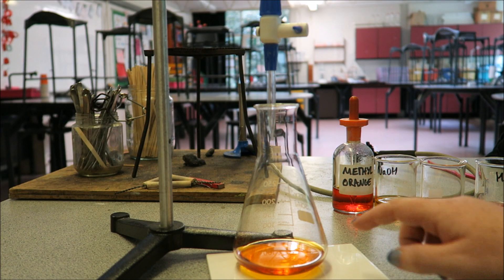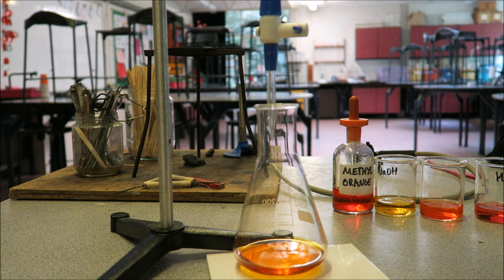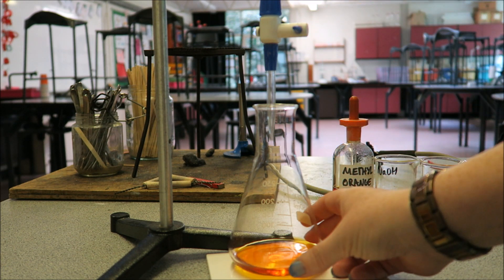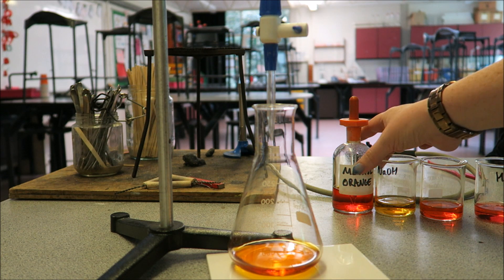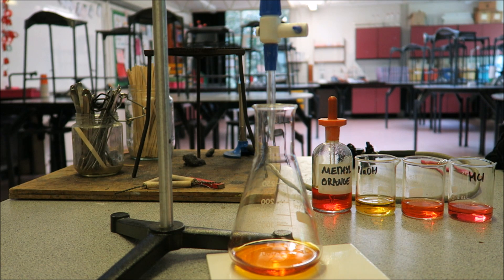Here we have our titration set up. We have our conical flask on our white tile so you can see the color change. Our burette with the acid in. What we are going to do is slowly let it out until we get to our endpoint, which we can see over here.